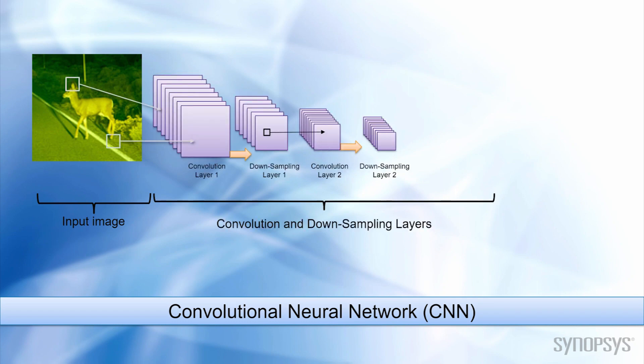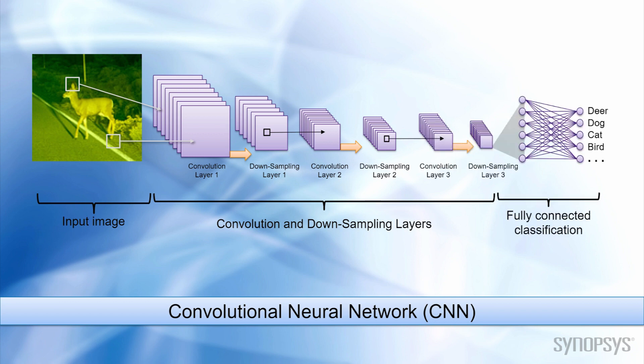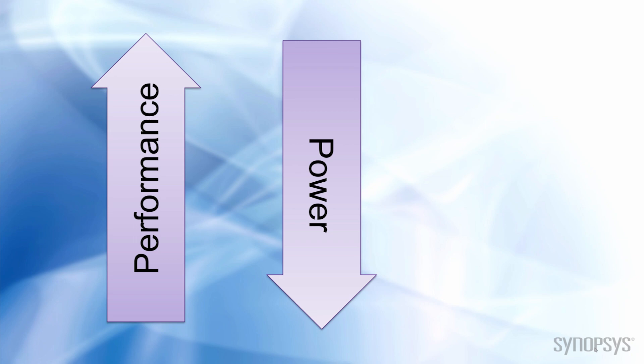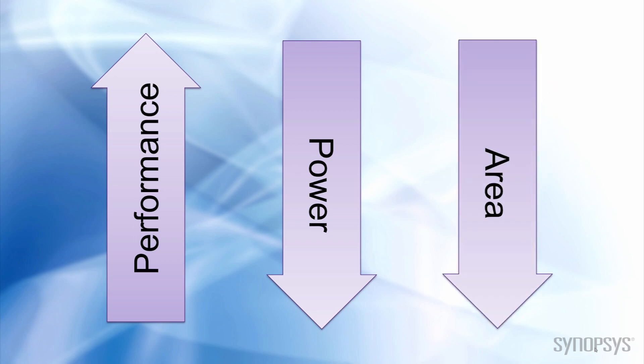or CNNs, require fast, massive calculations on each image. The main design challenge of Embedded Vision Processing is the need to balance a processor's performance with power, cost, and size considerations.